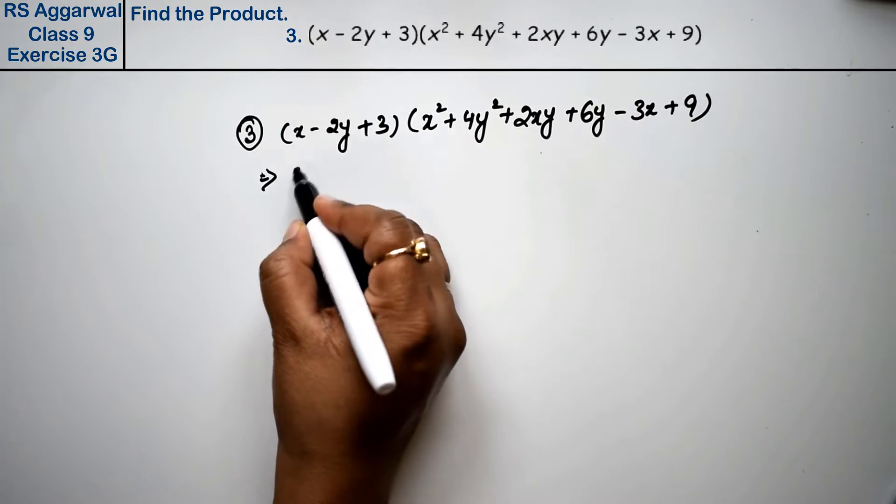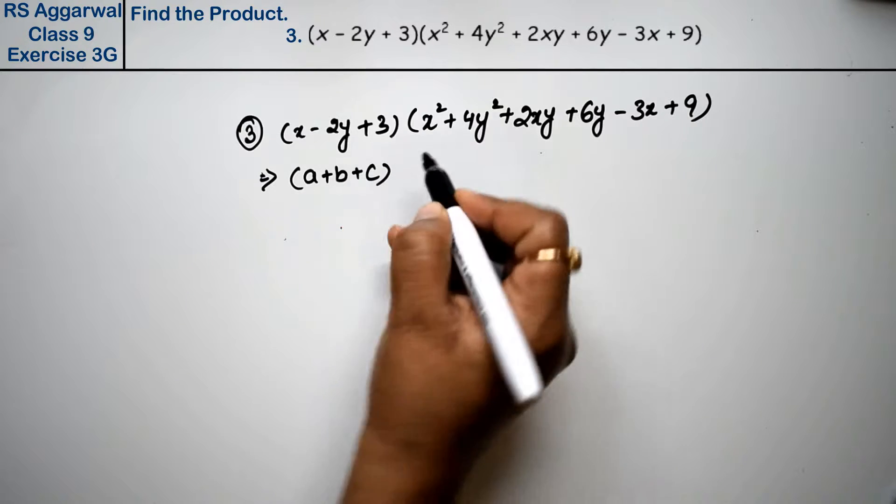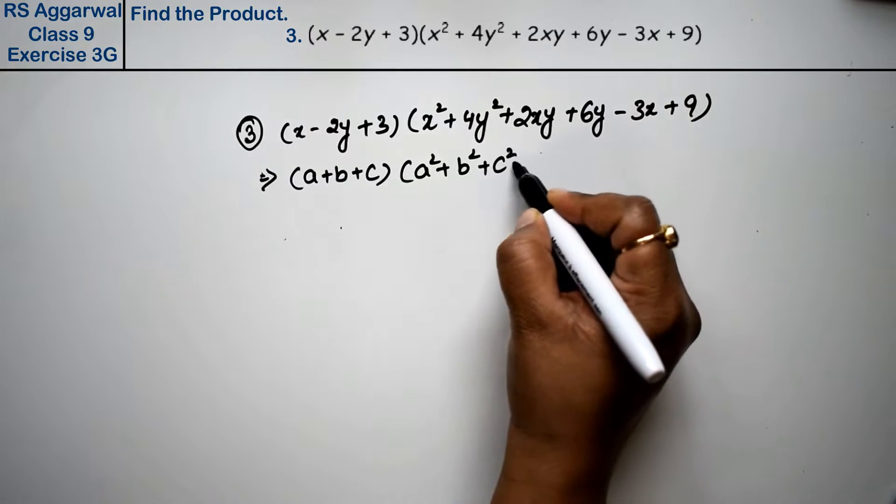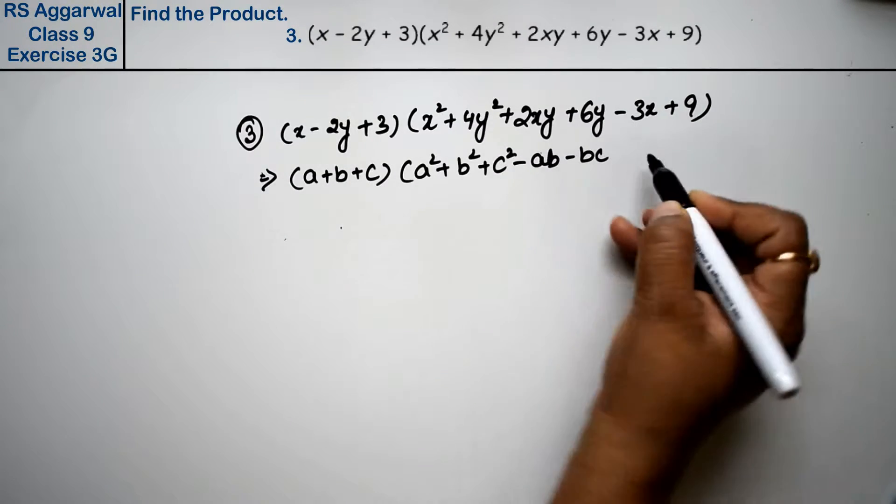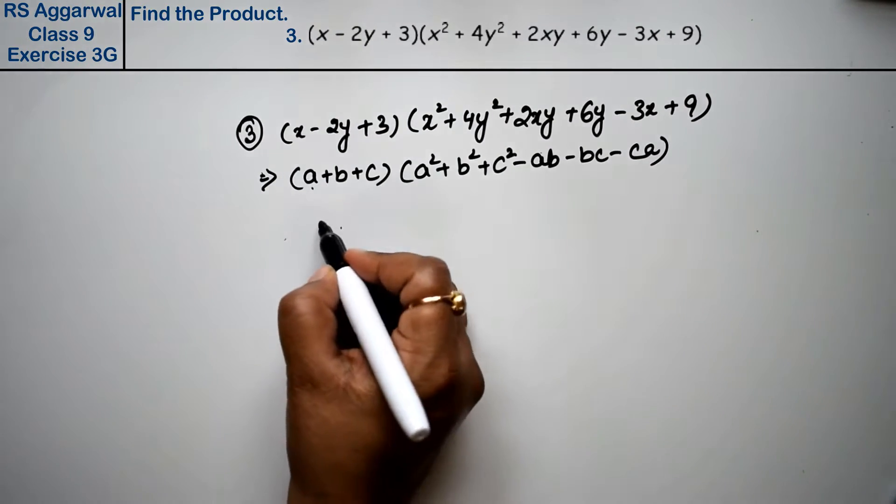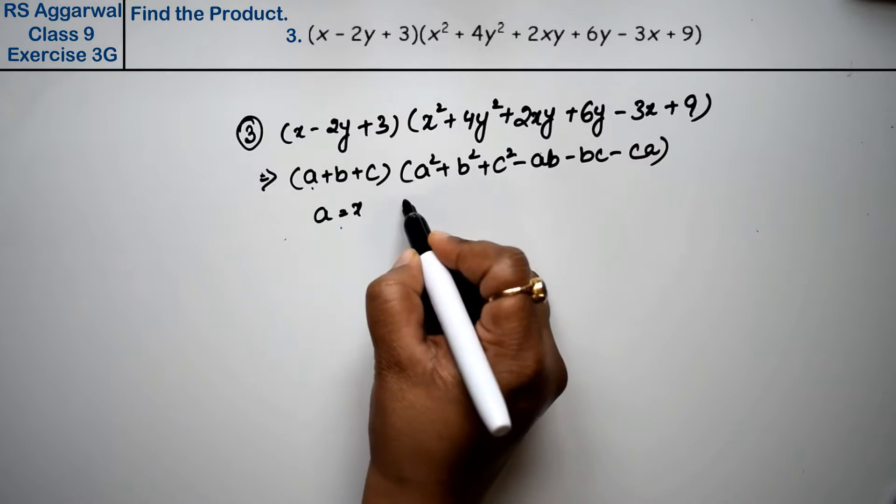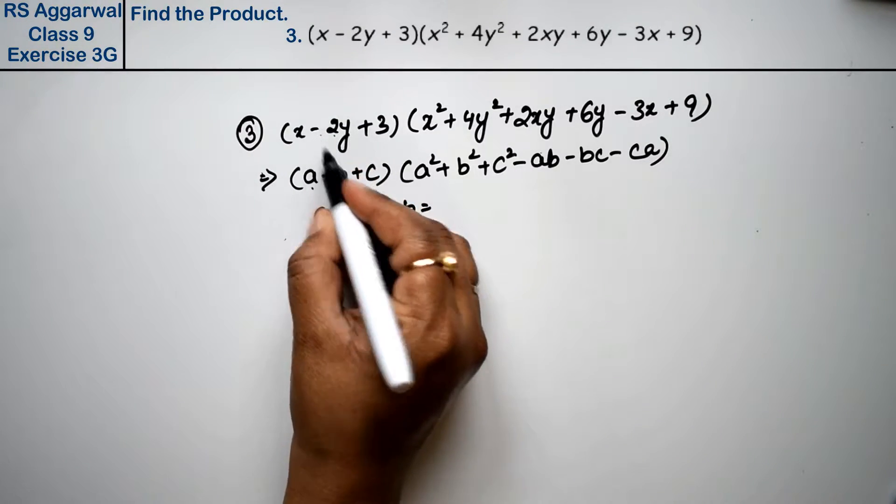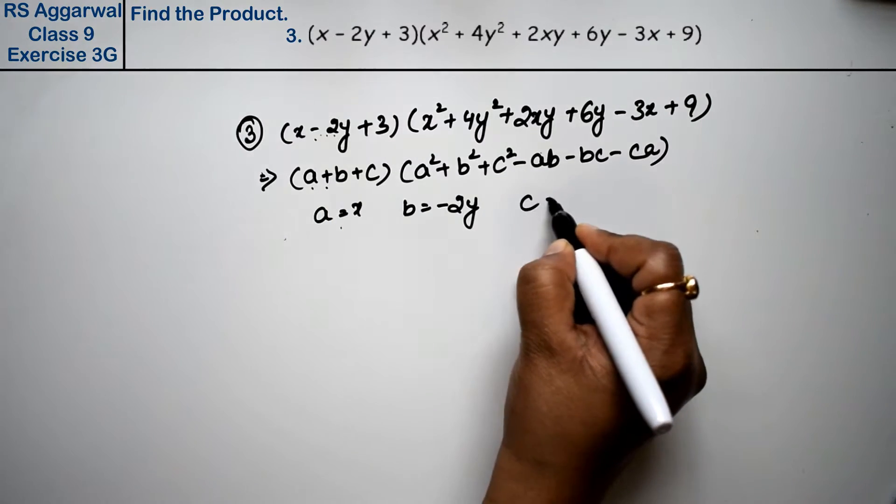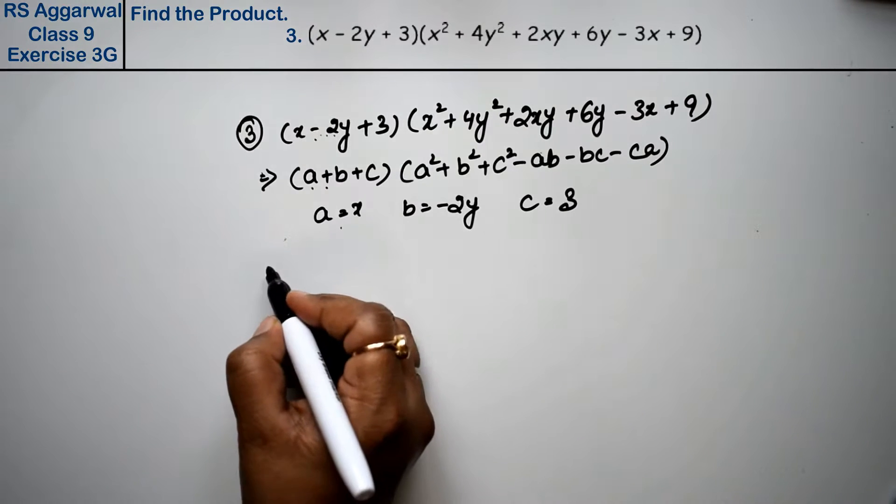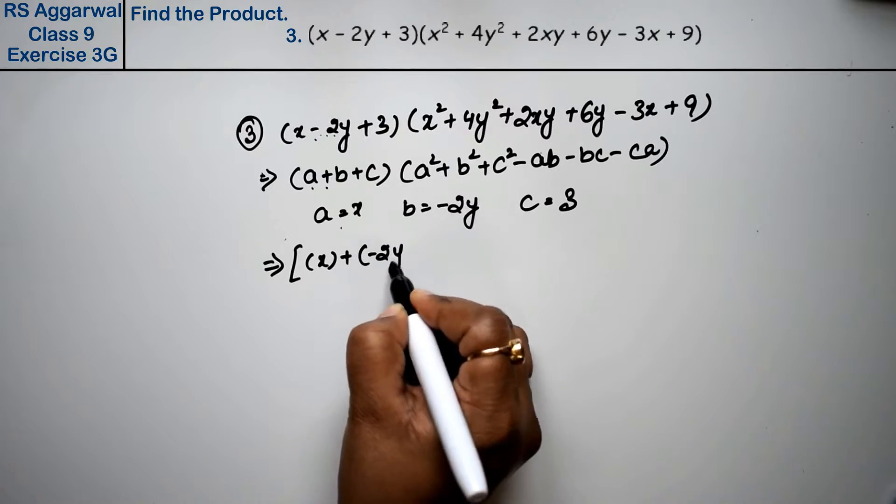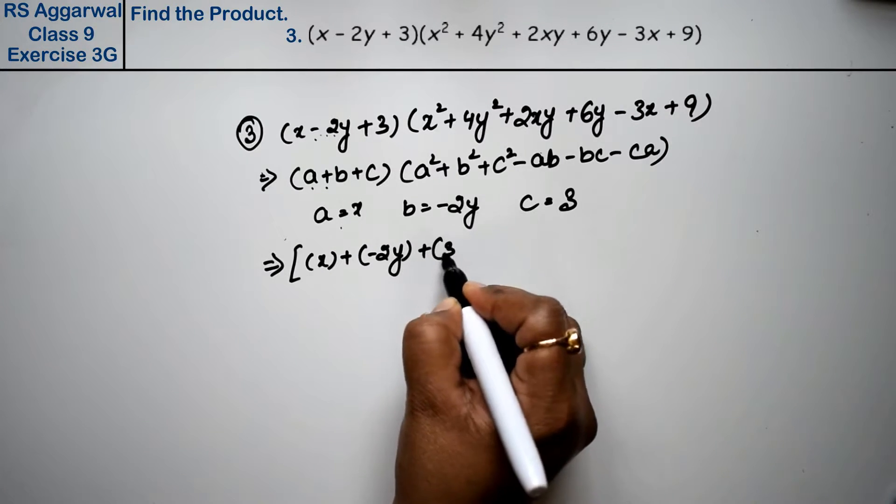Our formula was (a + b + c)(a² + b² + c² - ab - bc - ca). Here, a is x, b is -2y (because it was plus but it was minus), and c is 3. So we can write: a + b + c = x + (-2y) + 3.